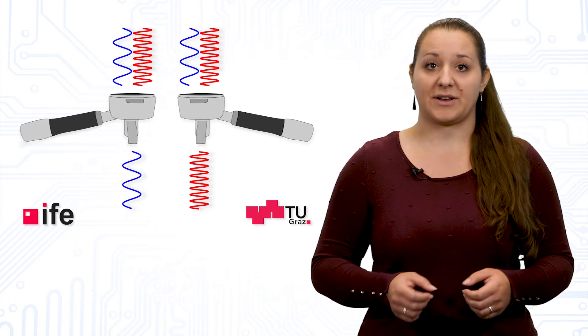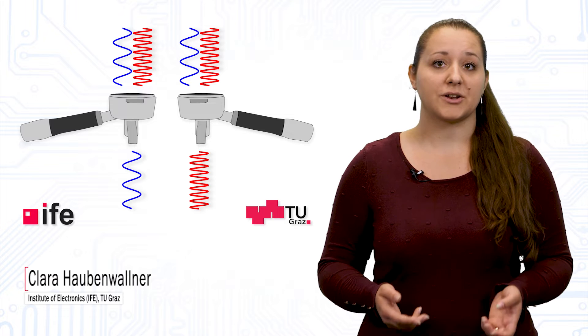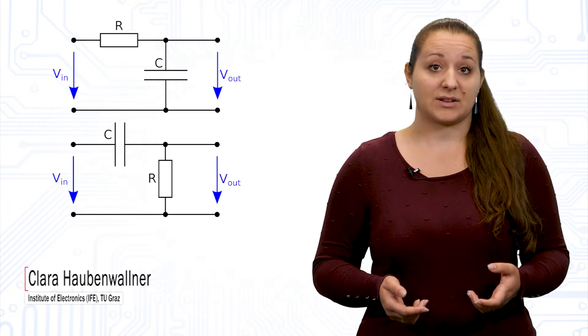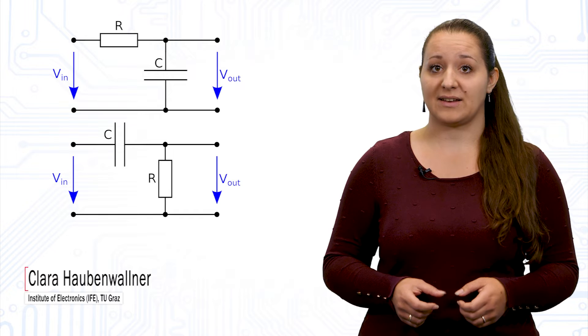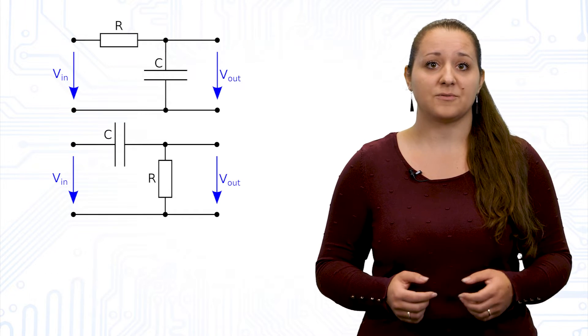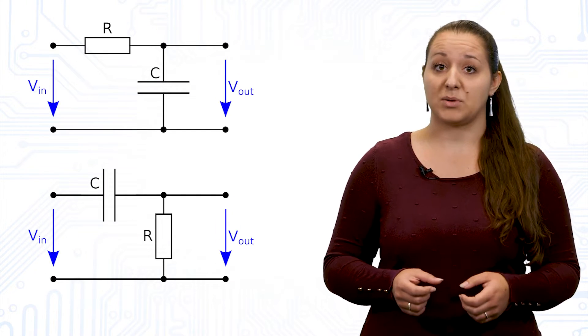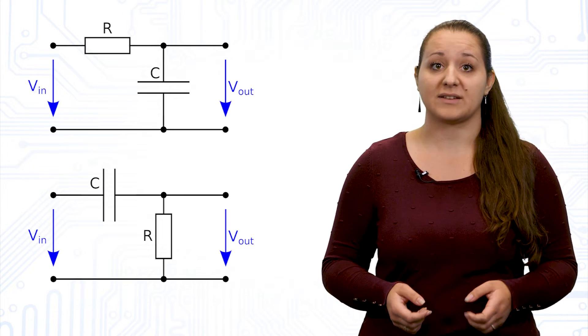In our last videos on analog filters, we already got to know the world of passive filters. These filters, like their name already tells us, consist of passive components like capacitors or resistors, and they belong to the simplest filter circuits in electronics.